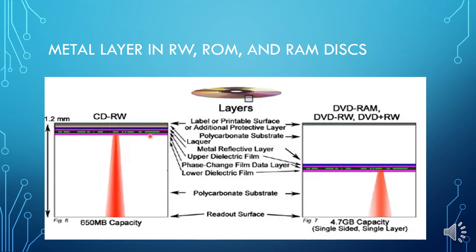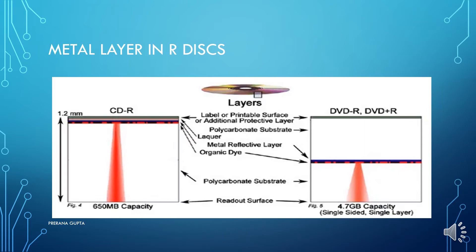In the figures shown, for CD read-write and DVD-RAM, aluminum is used for the reflective layer. Aluminum is used mainly because it is inexpensive and easy to apply, but aluminum oxidizes on exposure to oxygen from the environment or to moisture that has penetrated the disc.